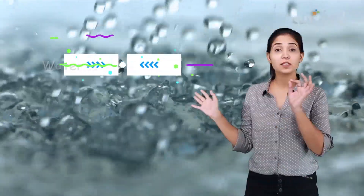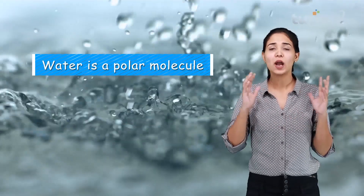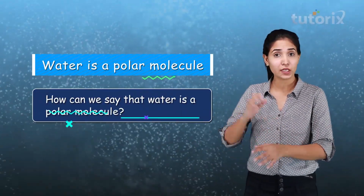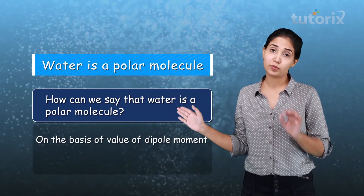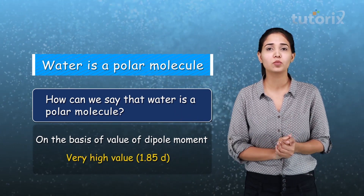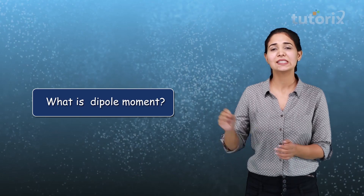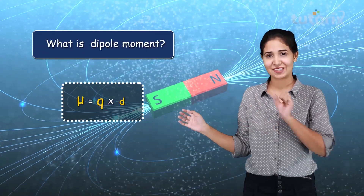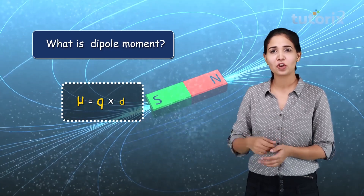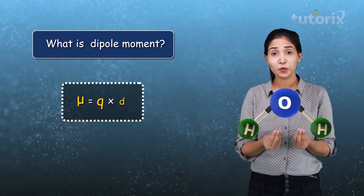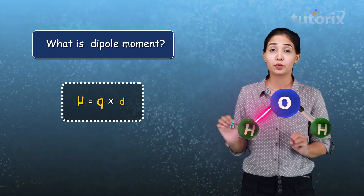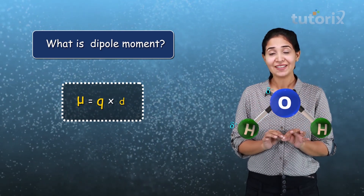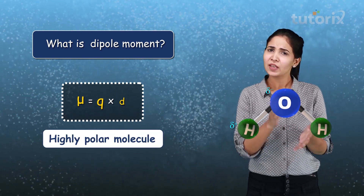We know that water is a polar molecule. The question arises: on what basis can we say water is a polar molecule? We say this on the basis of its dipole moment — it has a very high value of dipole moment. Dipole moment is the product of charge and the distance between them. Since this value is very high, water is a highly polar molecule.